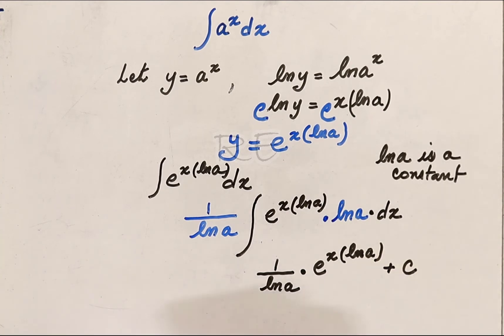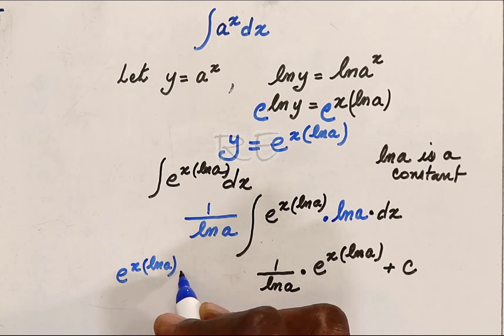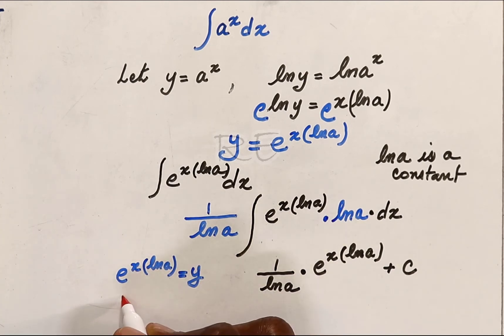Let's recall that e to the x ln a is y. E to the x times ln a is equal to y. And let's recall also that y is a to the x.